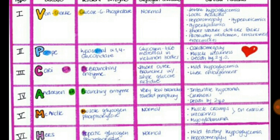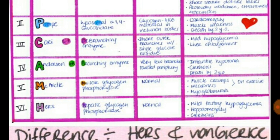Type 5 is McArdle's disease — M for M, muscle glycogen phosphorylase. Glycogen structure is normal. Features include muscle cramps, weakness, and myoglobinuria on exercise. Type 6 is Hers disease — H for H, hepatic glycogen phosphorylase. Features include mild fasting hypoglycemia, hepatomegaly, and cirrhosis. The difference from von Gierke is that hypoglycemia is very severe in von Gierke but mild in Hers.